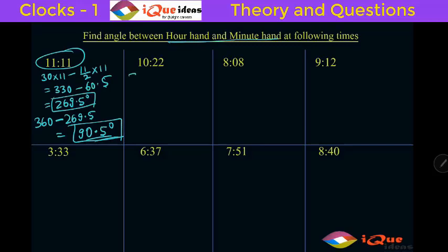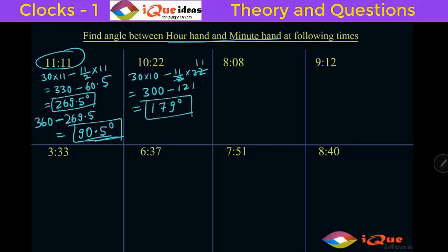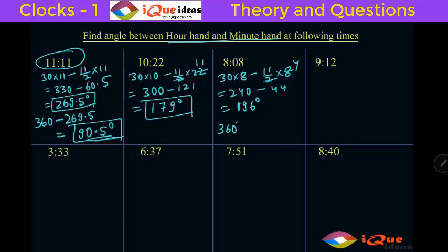For 10:22: 30 times 10 minus (11/2) times 22. Two cancels with 22 giving 11, so 300 minus 121 = 179 degrees. This is less than 180, so 179 degrees is the answer. For 8:08: 30 times 8 minus (11/2) times 8 = 240 minus 44 = 196 degrees. This is more than 180, so 360 minus 196 = 164 degrees is the answer.